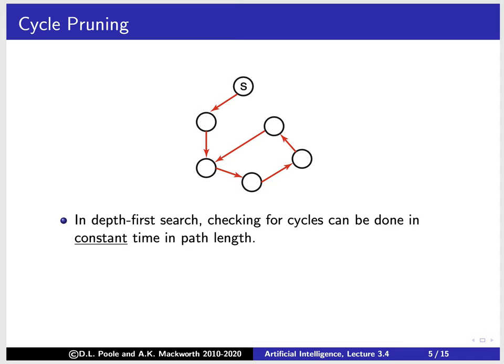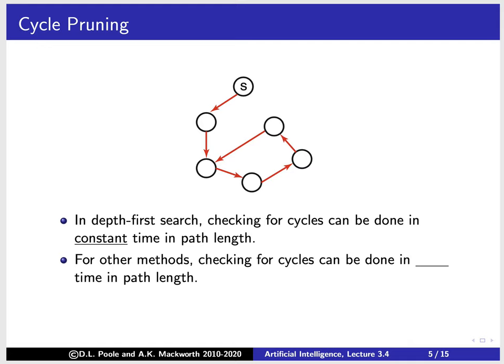However, for other methods it turns out that it doesn't take constant time. For other methods, checking for cycles requires checking all the way up because there are lots of different sets to worry about. For every element you have to handle those sets, and you can't do better than linear time. So cycle pruning seems sensible for depth-first search, but for other methods it takes extra time. And even for depth-first search, if done naively it also takes linear time; you need to store it efficiently.